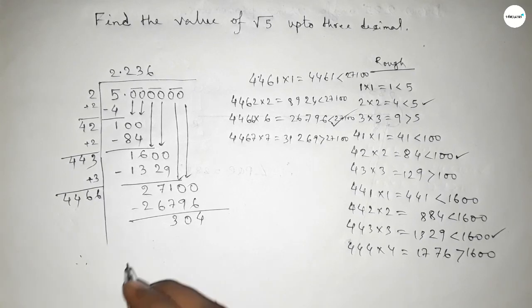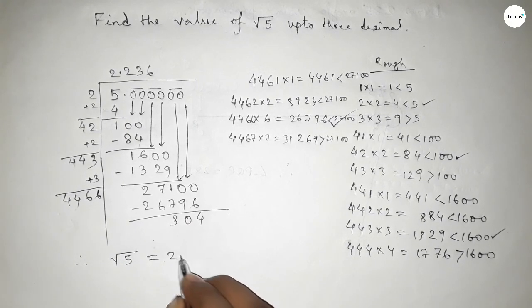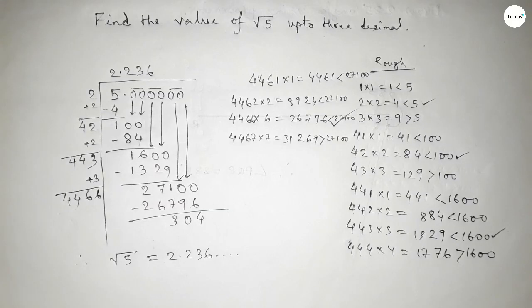We can continue to find out the value of root 5, but we have to find out up to 3 decimal. So root 5 equal to 2.236. That's all, thanks for watching. If this video is helpful then please see.